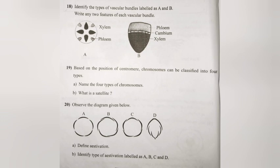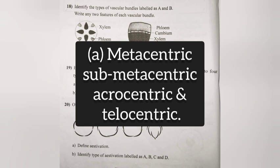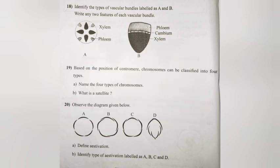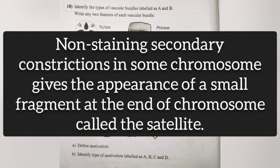Question 19: Based on the position of the centromere, chromosomes can be classified into four types. (A) Name the four types. Answer: Metacentric, submetacentric, acrocentric, and telocentric. (B) What is a satellite? Answer: Non-staining secondary constrictions in some chromosomes give the appearance of a small fragment at the end of a chromosome, called the satellite.